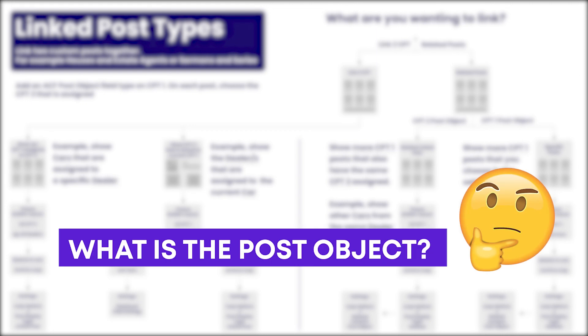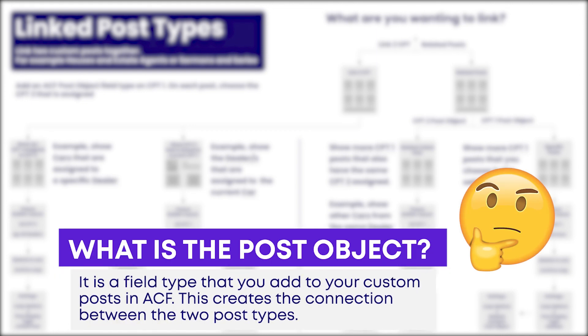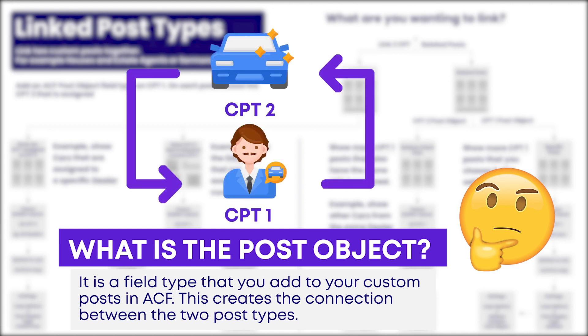But first, we need to talk about the post object. What is the post object? This is basically the glue that keeps it all together — it's what creates the relation between the two posts. It's a field that you add to your custom post in Advanced Custom Fields, and that creates the connection between the two posts. You'd be utilizing this whether you're setting up linked or related link posts.